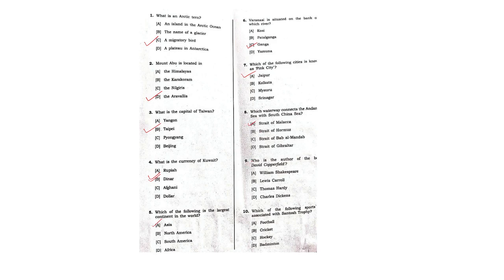The next question: Who is the author of the book David Copperfield? The answer is option D — Charles Dickens. Which of the following sports is associated with the Santha Trophy? The answer is option A. The next question is about which religion — the answer is option A, Zoroastrianism.